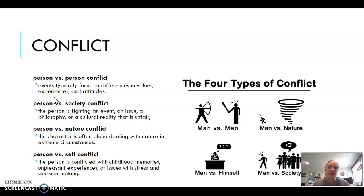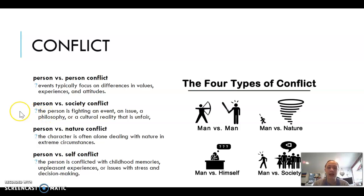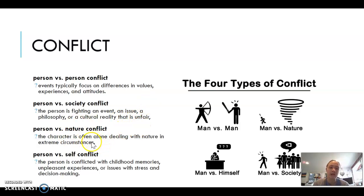Examples of person versus person conflict include Harry Potter versus Voldemort, and Katniss Everdeen versus President Snow. Then there's person versus society conflict, where the person is fighting an event, an issue, a philosophy, or a cultural reality that is unfair — like Katniss Everdeen fighting the Hunger Games, which is a cultural reality unfair to most of its people.